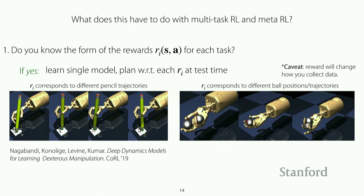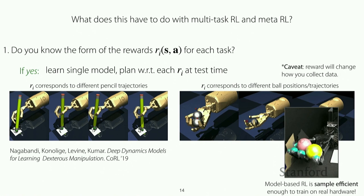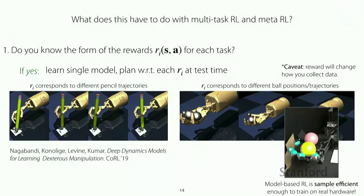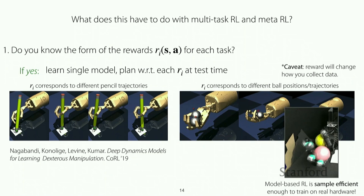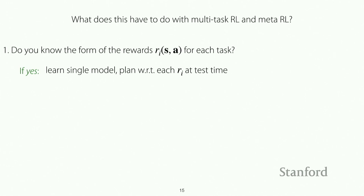Because model-based methods can learn a model quickly with relatively small amounts of data, they were able to run this method on a real robot — collecting all data on the real robot and fitting a model to it — getting a real Shadow Hand to perform the task. This is pretty recent work; it was published at CoRL last week. That's what happens if we know the reward function.